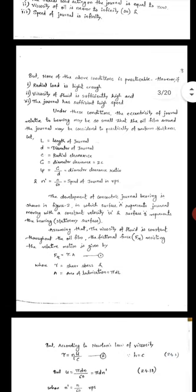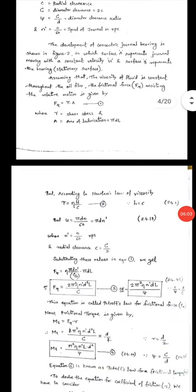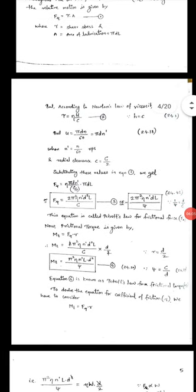The frictional force F_mu resisting the relative motion is given by F_mu equals tau times A, equation 1, where tau is shear stress and A is the area of lubrication pi D L. But according to Newton's law of viscosity, shear stress tau is nu times U by C, equation 2. But U is pi D N by 60 or pi D N dash, where N dash is N by 60 RPS. Radial clearance C is C by 2.